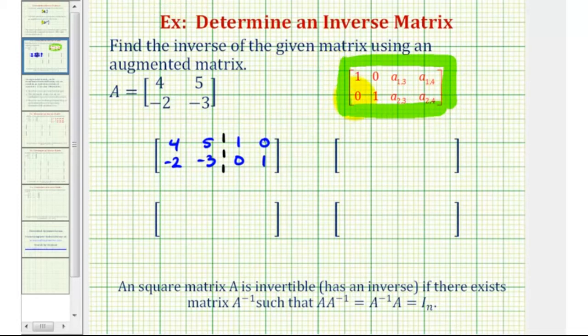So let's start by obtaining a 0 in this position and this position. So we want to have a 0 in this position. Notice that the common multiples of 2 and 4 would be 4. And these are already opposite signs. So we can replace row 2 with 2 times row 2 plus row 1 to obtain a 0 in this position.